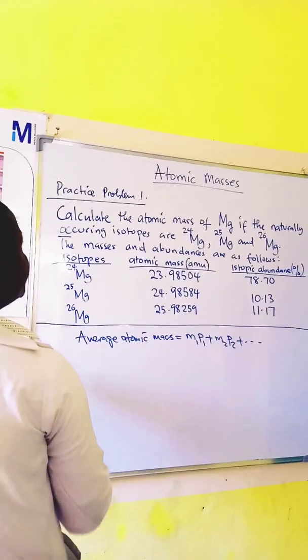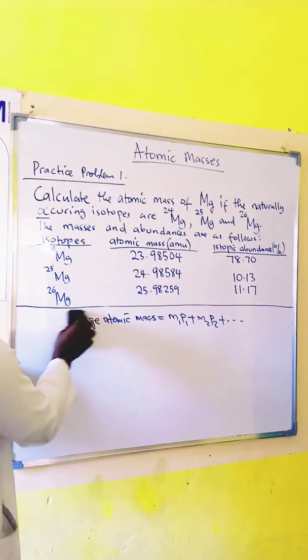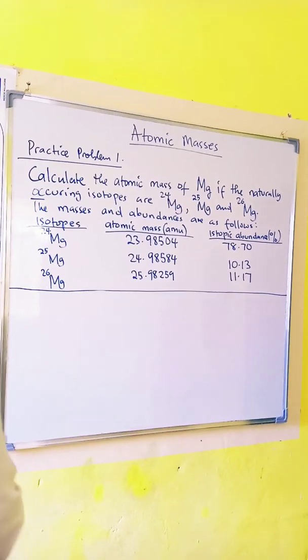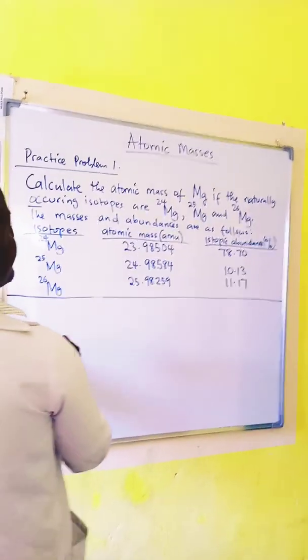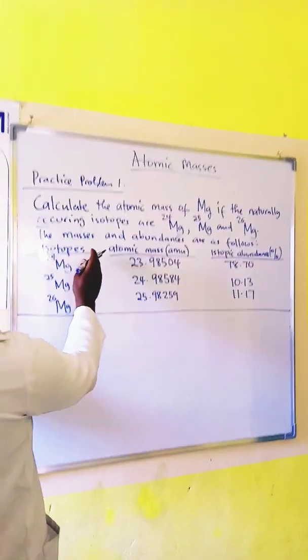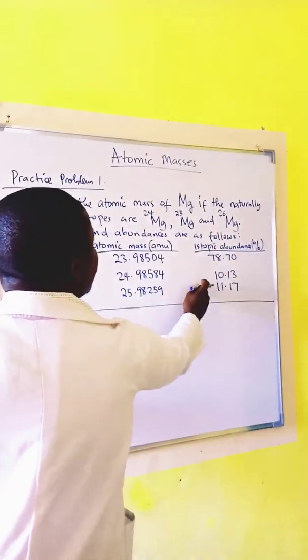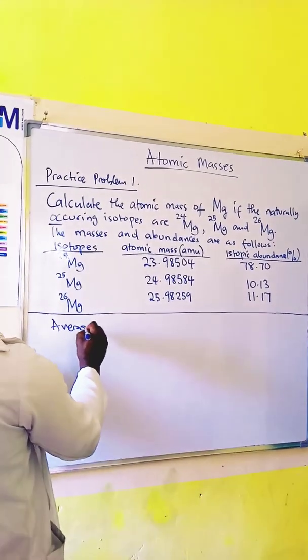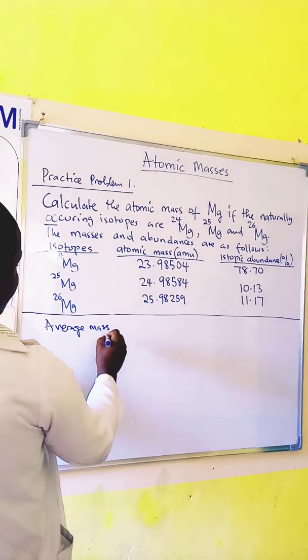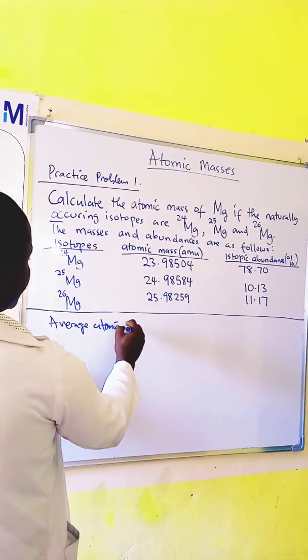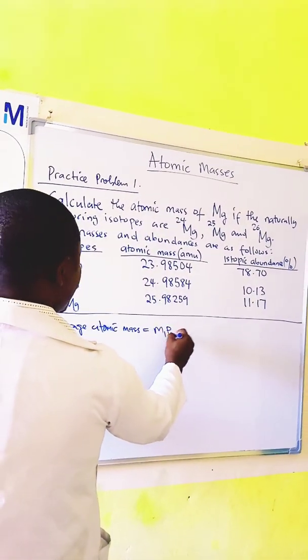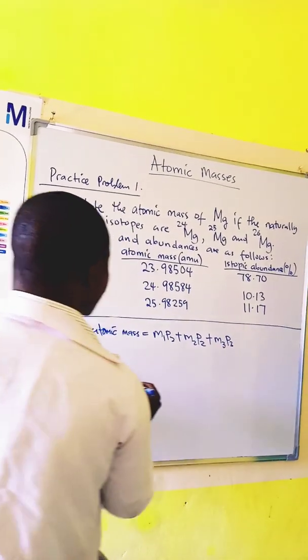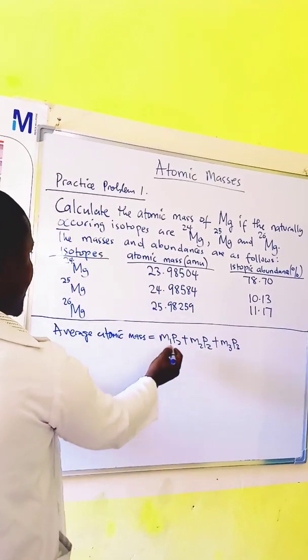Now we can use this formula to work out this practice problem. Calculate the atomic mass of magnesium if the naturally occurring isotopes are magnesium 24, 25, and 26. These are the isotopes, the mass, and the percentage isotopic abundances. So average atomic mass is equal to M1P1 plus M2P2 plus M3P3.